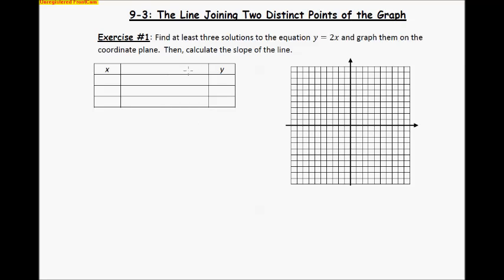Exercise 1 says find at least three solutions to the equation y equals 2x, and we've done that before. We've had this little table before, and we've come up with some values for x that we plug in, and we've figured out what y is. And then the next thing says graph them on the coordinate plane, so we've done that before as well, and then calculate the slope of the line. So we're really taking two or three different things and just putting them together in one problem.